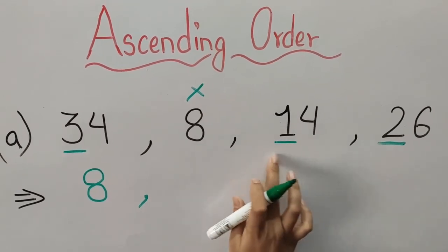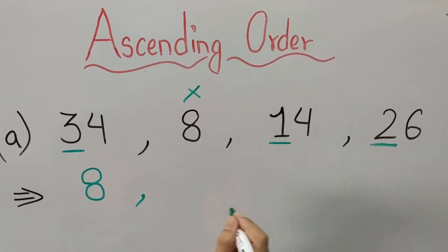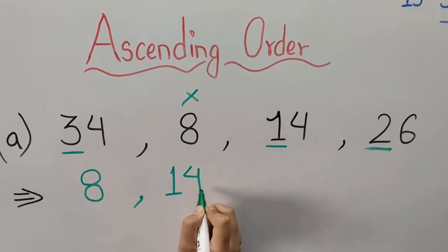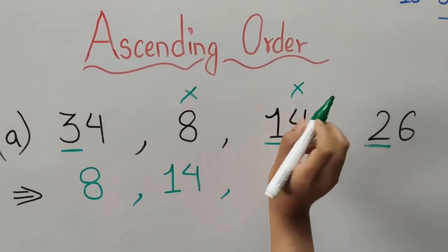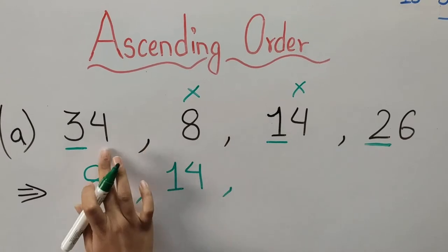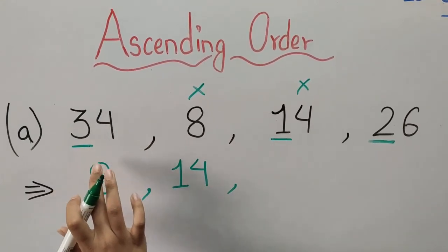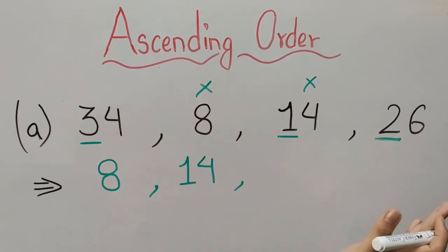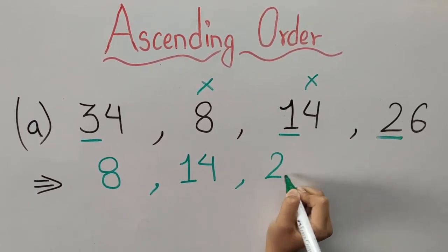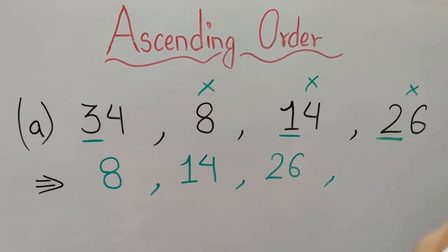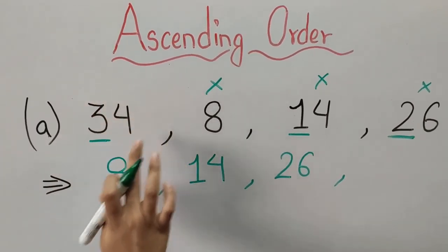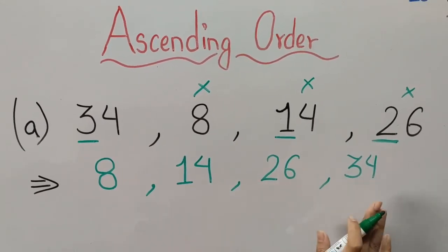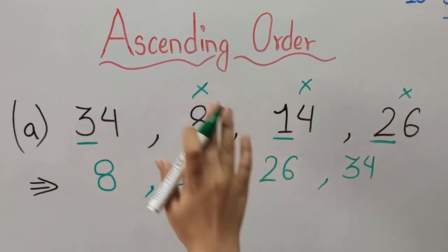One is the smallest number, so 14 comes first. We still have two numbers remaining: 34 and 26. In 34, three is the first number, and in 26, two is the first number. So two comes first, meaning we write 26, and then 34 is the last — the biggest number. So the answer is 8, 14, 26, and 34, arranged in ascending order.